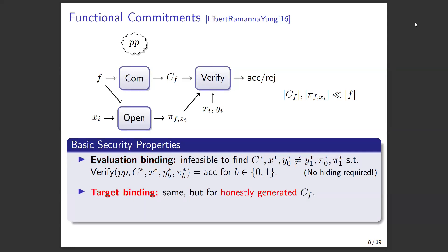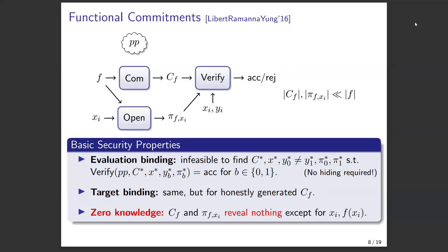A more relaxed version is target binding, where someone honestly commits to f but then someone else tries to open it in two different ways at some value x. If you want hiding, you could ask for zero knowledge: the commitment and proofs reveal nothing to the verifier except the input-output pairs that have been proven. The function remains hidden except at provided input-outputs.